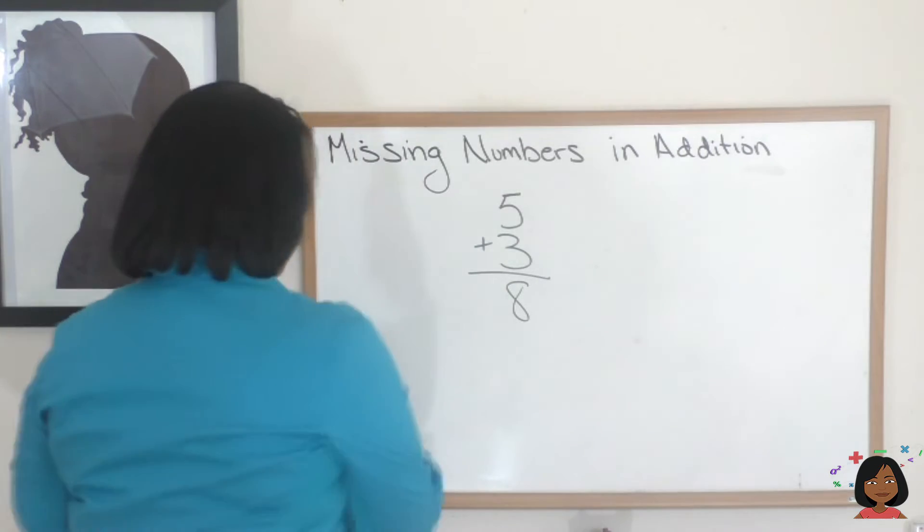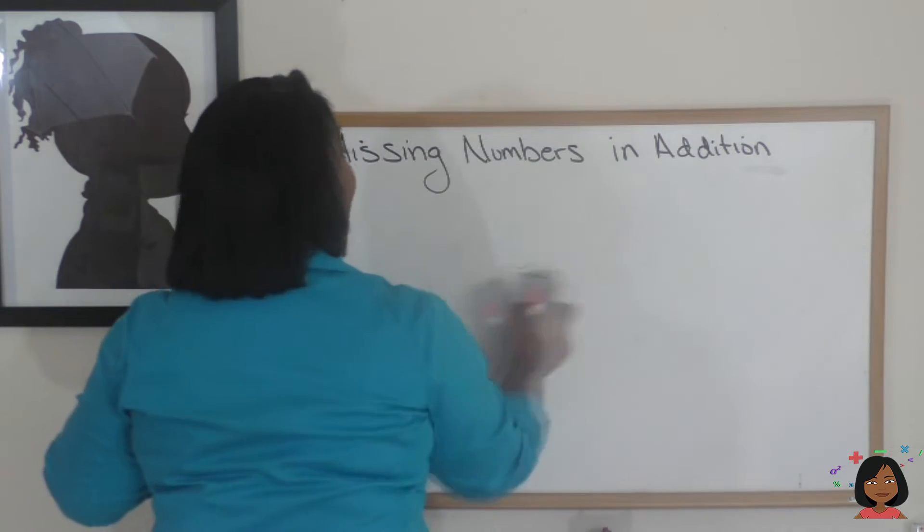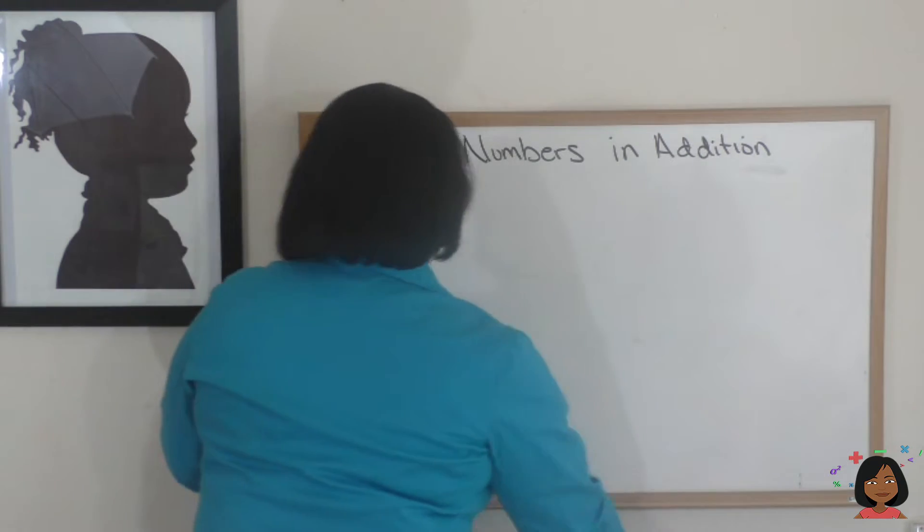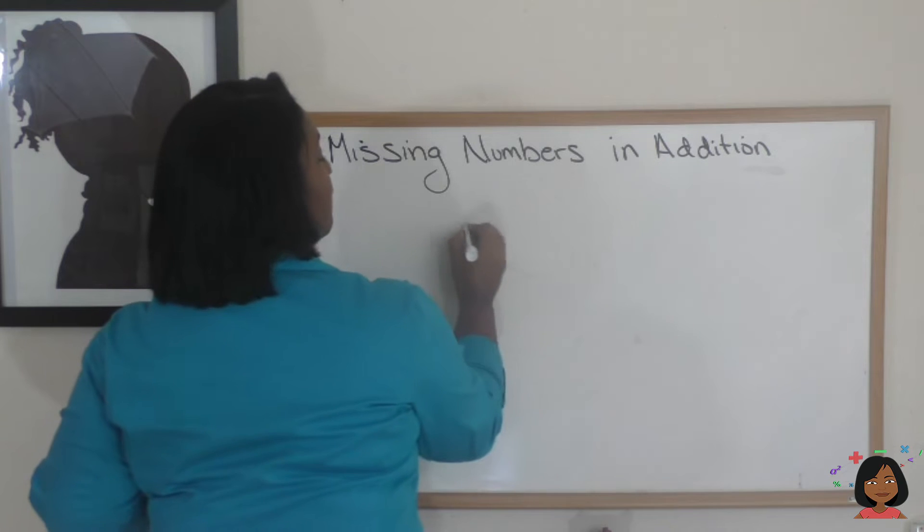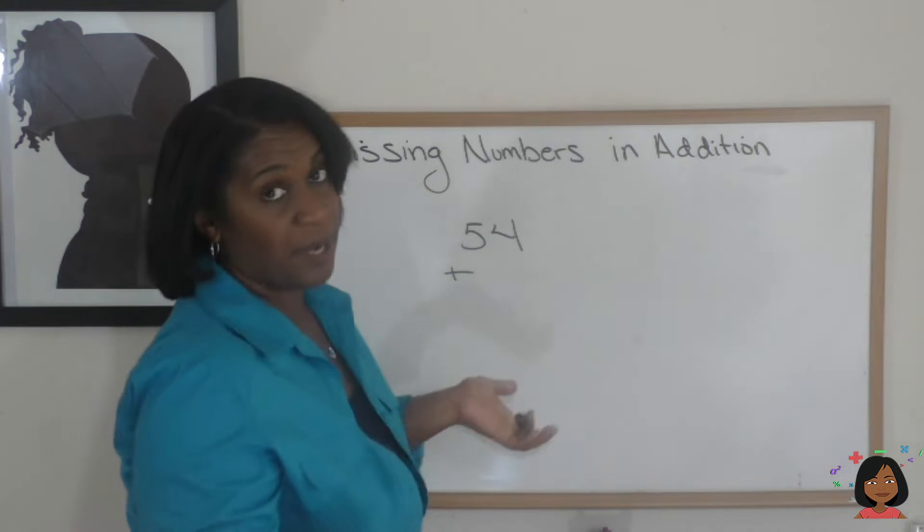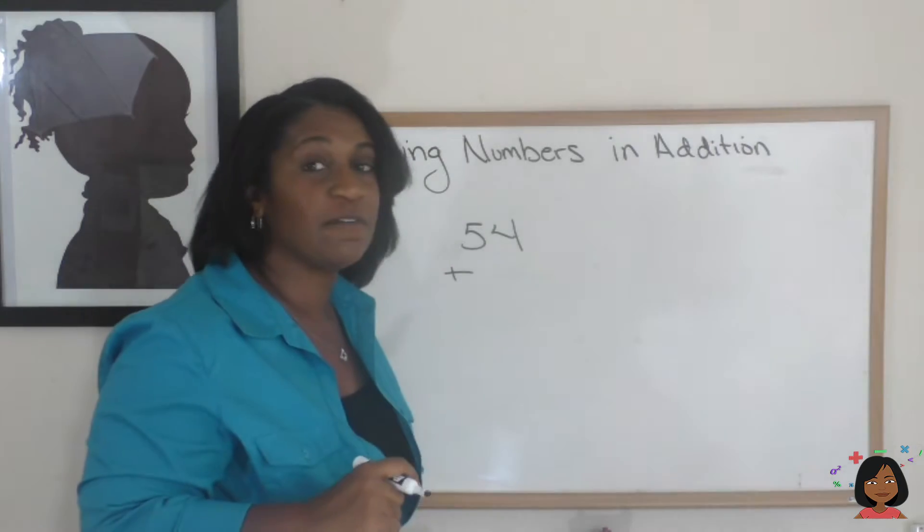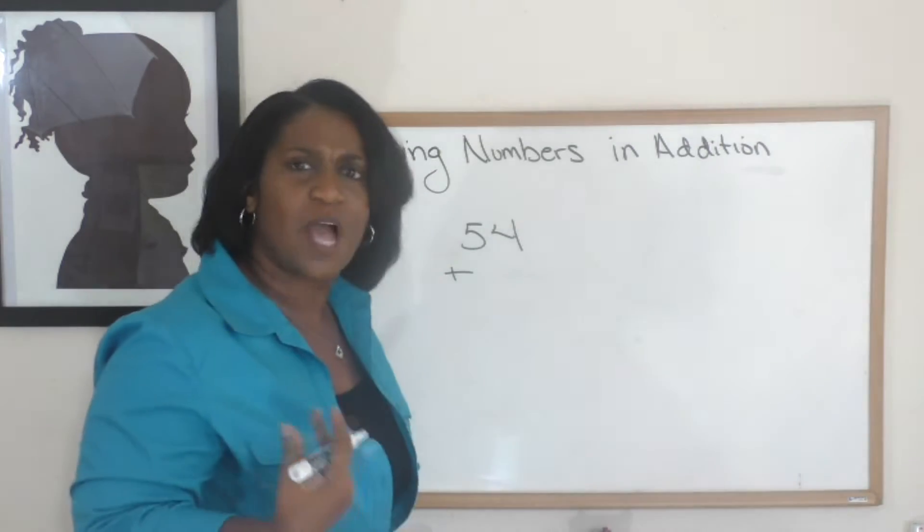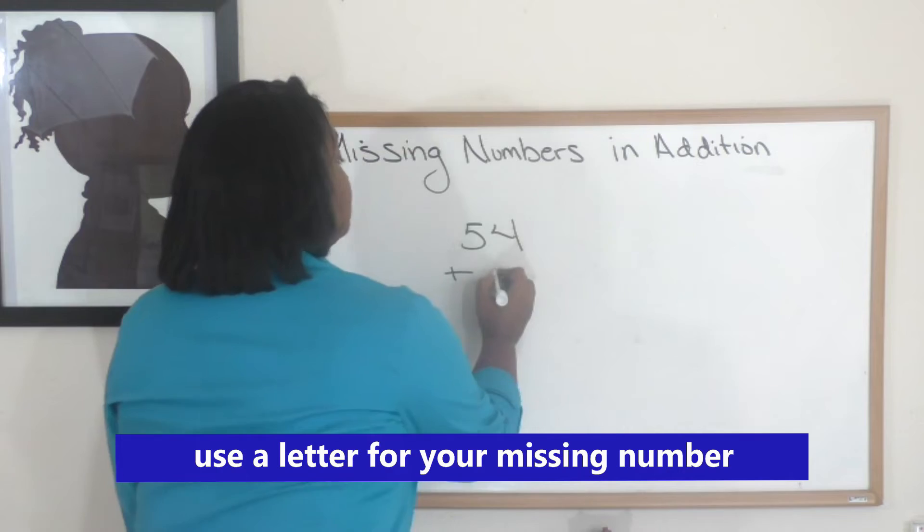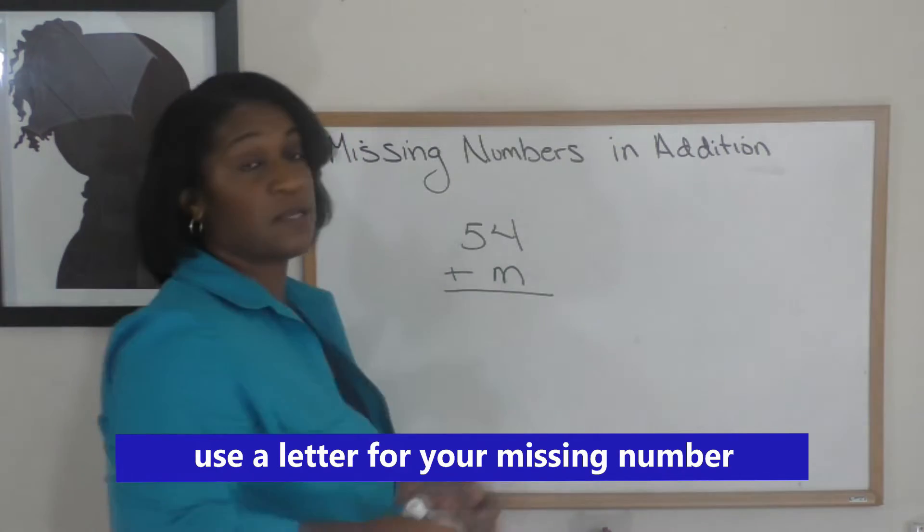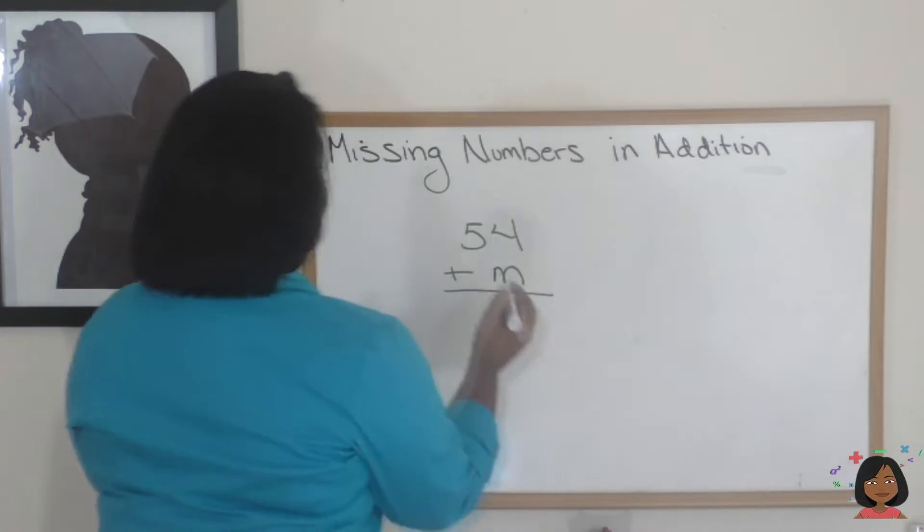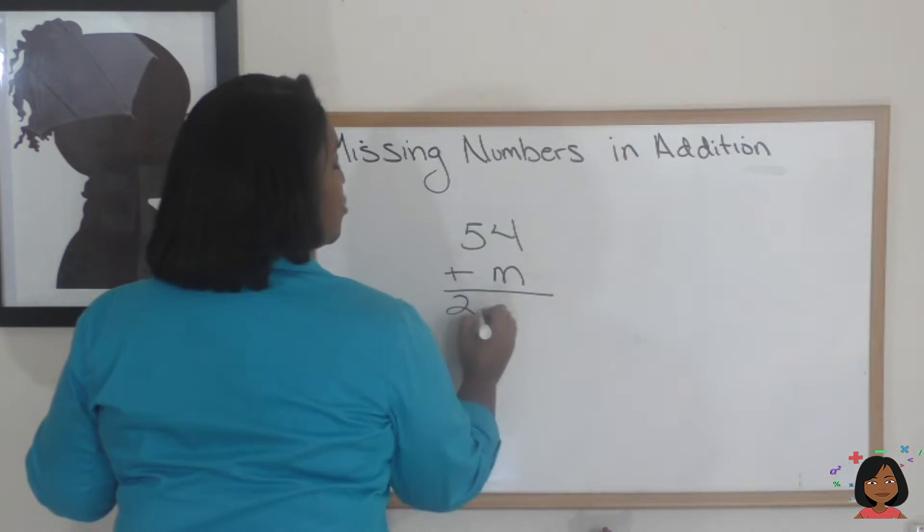Let me give you a different example here with an actual missing number. Let's say we had 54 plus some number. You get to choose what letter you'd like to use. I'm feeling like an M this morning. 54 plus some number will give me 210.